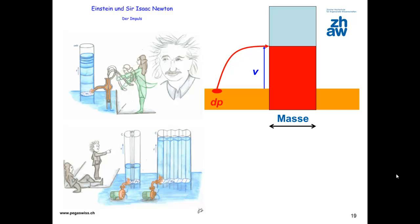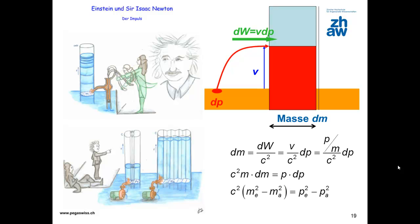The conveyance of momentum into a body also means the conveyance of energy. This energy increases the body's mass. Part of the momentum flowing in must therefore first fill up the additional mass, and the rest of the momentum increases the velocity. The more momentum is pumped, the more momentum has to be used to fill the increasing mass, and the less momentum is left to increase the velocity. This can be expressed as a formula. An integration provides a relativistic mass-momentum relation.